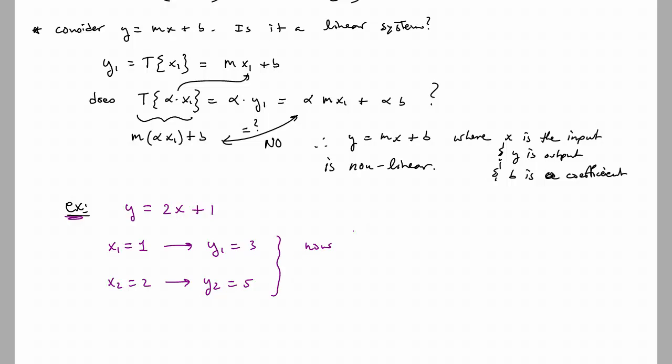Now the question is, does the system operating on X1 plus X2, in other words 1 plus 2 or 3, does that yield Y1 plus Y2, or in other words 8? Well, T operating on 3 actually gives us 2 times 3 plus 1, which is equal to 7, which is not equal to 8. Therefore, MX plus B does not satisfy additivity.